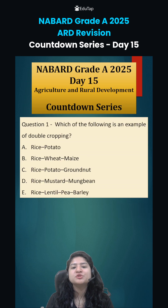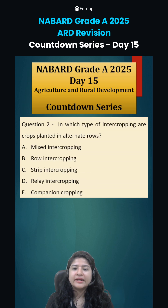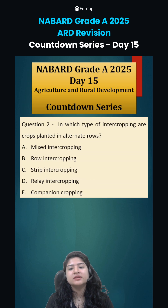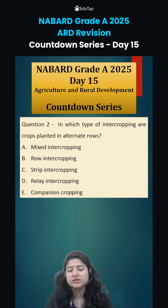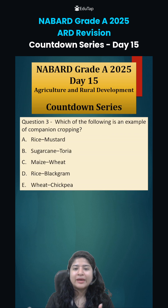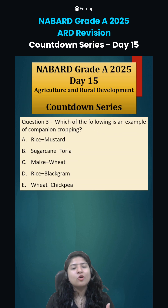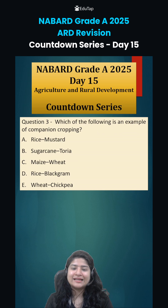Now coming to today's questions: first, which of the following is an example of double cropping? Second, in which type of inter-cropping are crops planted in alternate rows? Third, which of the following is an example of companion cropping? Write down your answers in the comment section and we will discuss in the next class. Thank you.